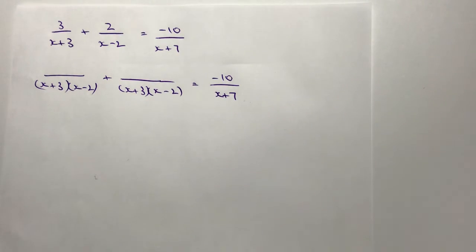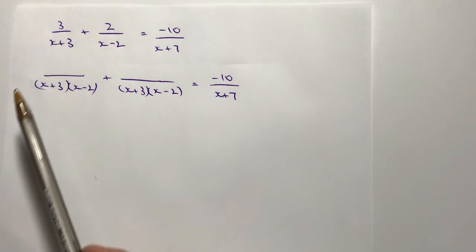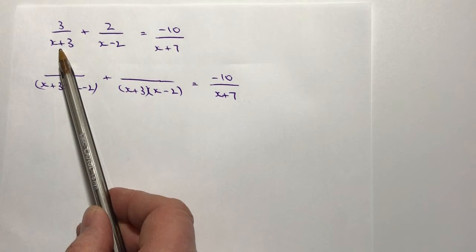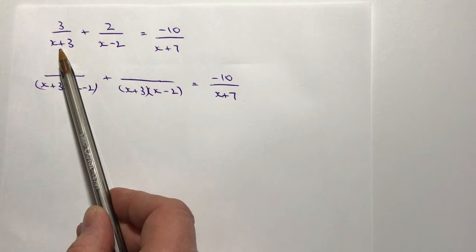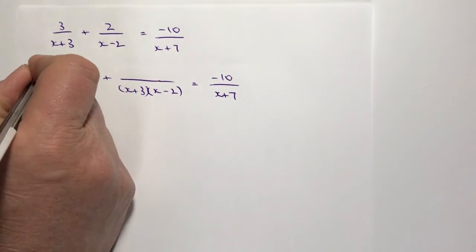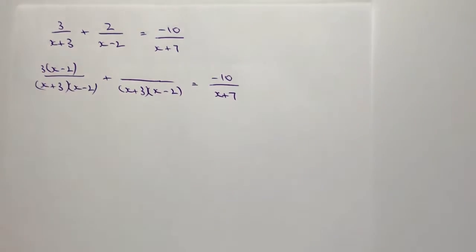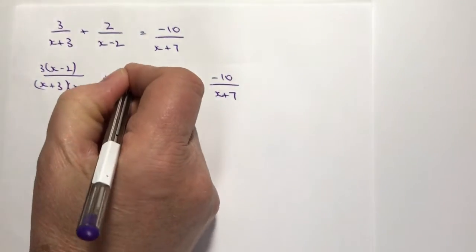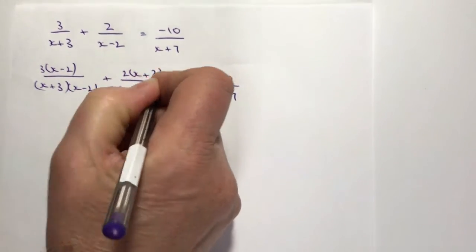So when I make these denominators the same, I look at this x plus 3 and say, well actually I need to multiply top and bottom by x minus 2. So the top here is going to become 3 times x minus 2. And then on the second fraction I need to multiply it by x plus 3.